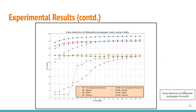Early detection of Wikipedia sock puppet accounts is possible. With just one edit, our features can detect sock puppetry with an F1 score of 0.73, and performance increases as more edits are included. For LSTM, our model initially performed better, but after about 10 edits it was crossed by LSTM with Solario features. However, with our features and Random Forest, it always performed best for both early detection and with more edits.